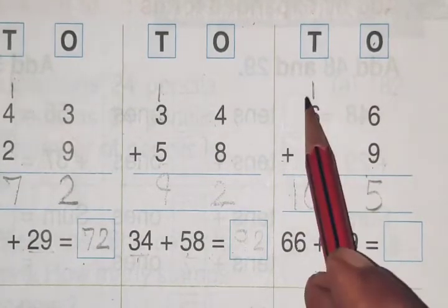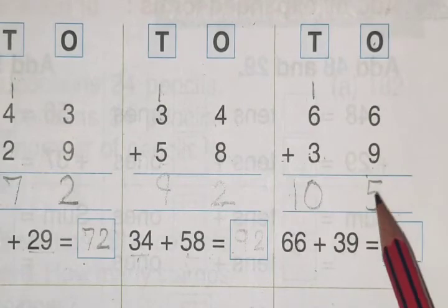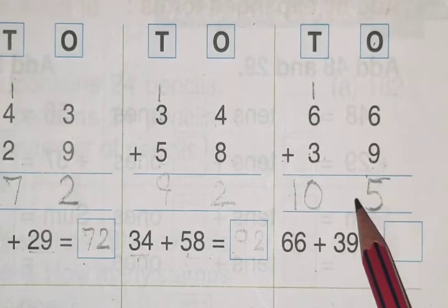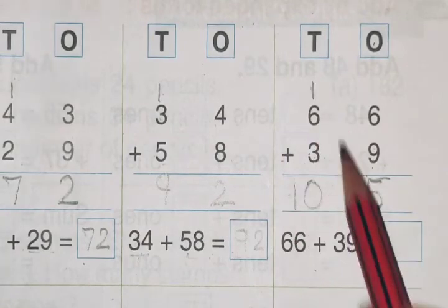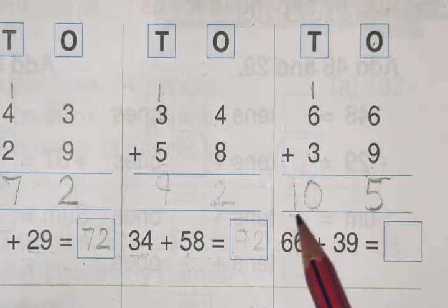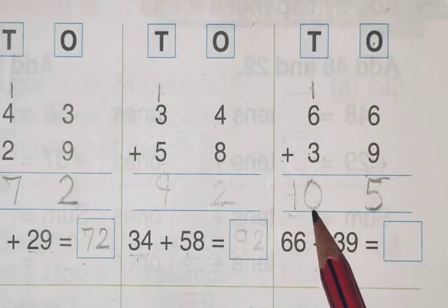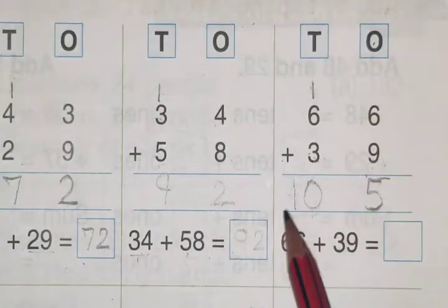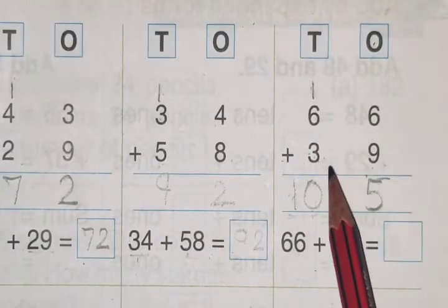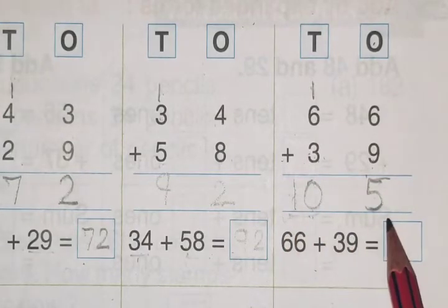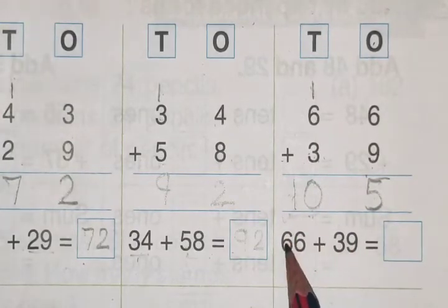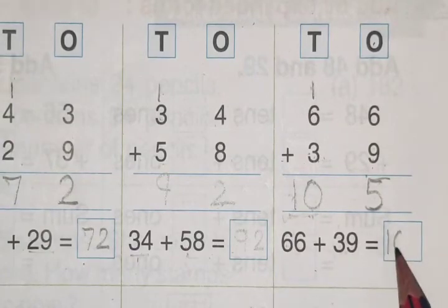6 plus 3 is 9, 9 plus 1 is 10. So here we have to carry here. And this one will carry here, and your answer is 105. So 66 plus 39 is equal to 105.